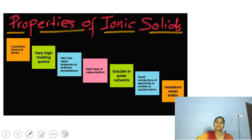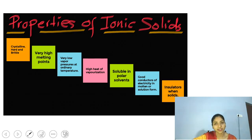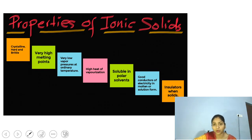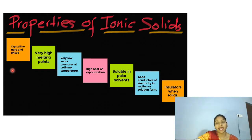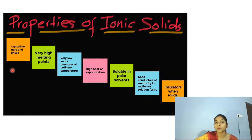Now let us discuss the properties of ionic solids. Positive and negative ions — cations and anions — combine with each other to form ionic solids. These ionic solids have certain properties. The number one property is that they are crystalline, hard and brittle.